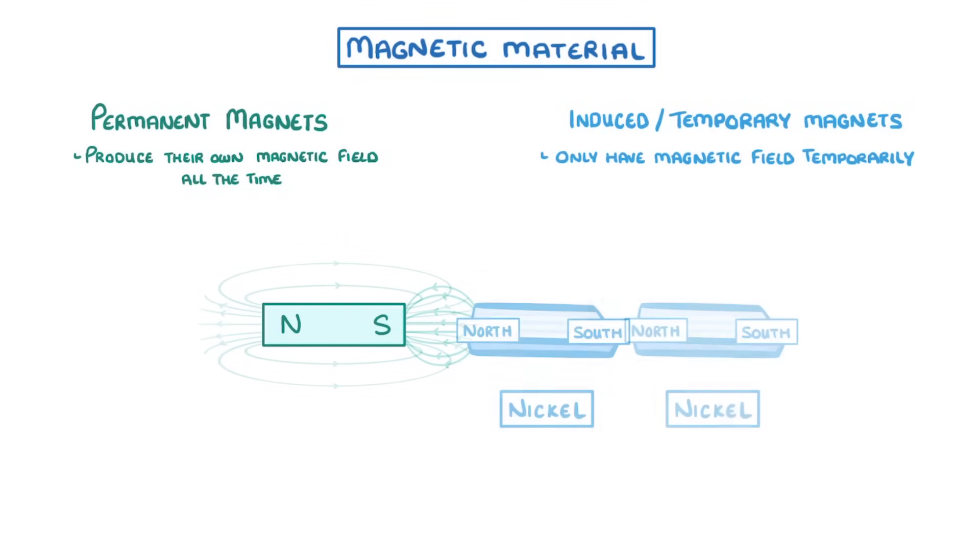If we then remove the induced magnet from the magnetic field though, then it will lose its magnetism. Some magnetic materials, like nickel and iron, lose their magnetism really quickly, and we call these magnetically soft materials.